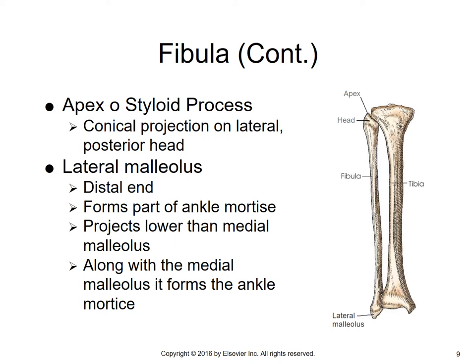The fibula is on the lateral side of the lower leg. Remember when we learned about the ankle — we learned about the malleoli. The medial malleolus is part of the tibia, and now we talk about the lateral malleolus, which is part of the fibula — it's its distal end. It too forms the ankle mortise and projects lower than the medial malleolus. So along with the medial malleolus, it forms the ankle mortise.